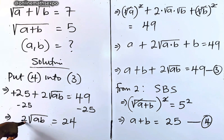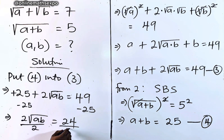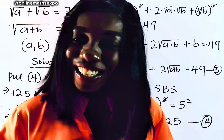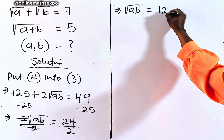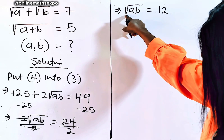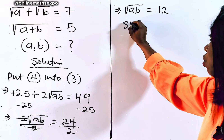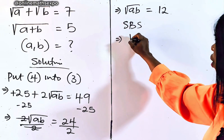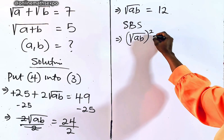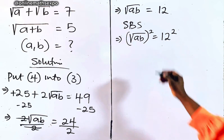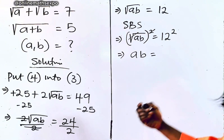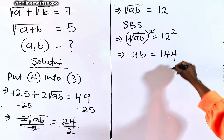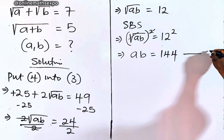To isolate √(ab), divide both sides by 2: √(ab) = 12. To remove the square root, square both sides again: (√(ab))² = 12². The square root cancels, giving ab = 144. Call this equation 5.